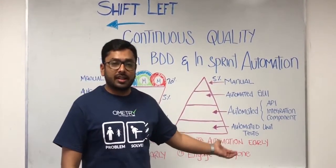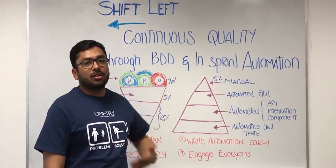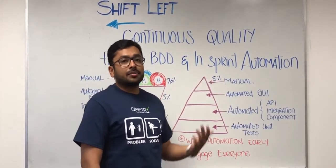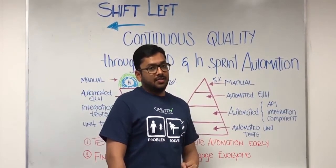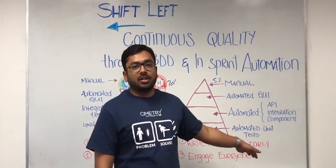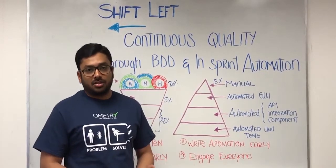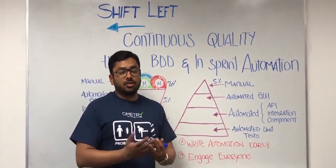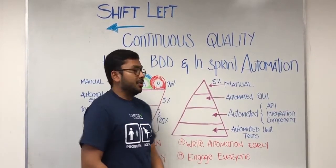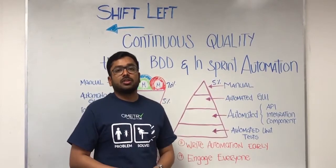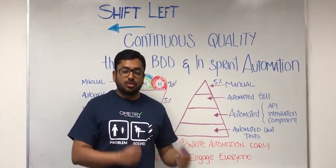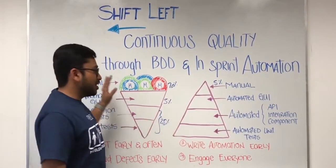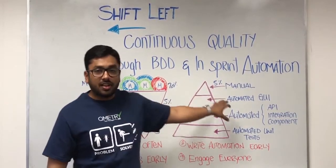You also want to write your automation earlier in the life cycle so you are not doing redundant tasks and you get your ROI on automation sooner. Additionally, you want to engage everyone in your testing process — not only the QA teams, but everyone responsible for the product should own the quality problem. That's why shift left helps us.